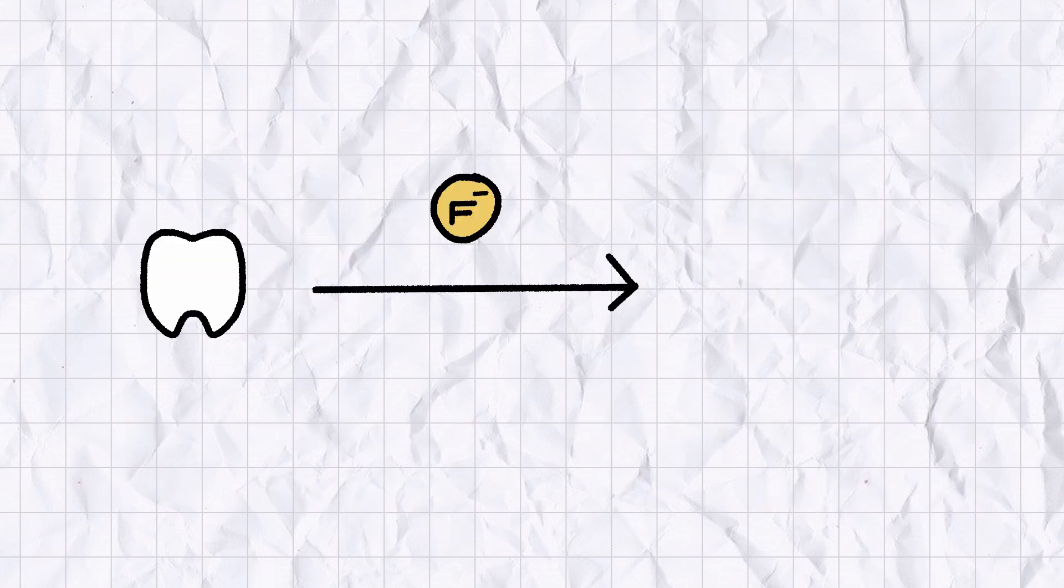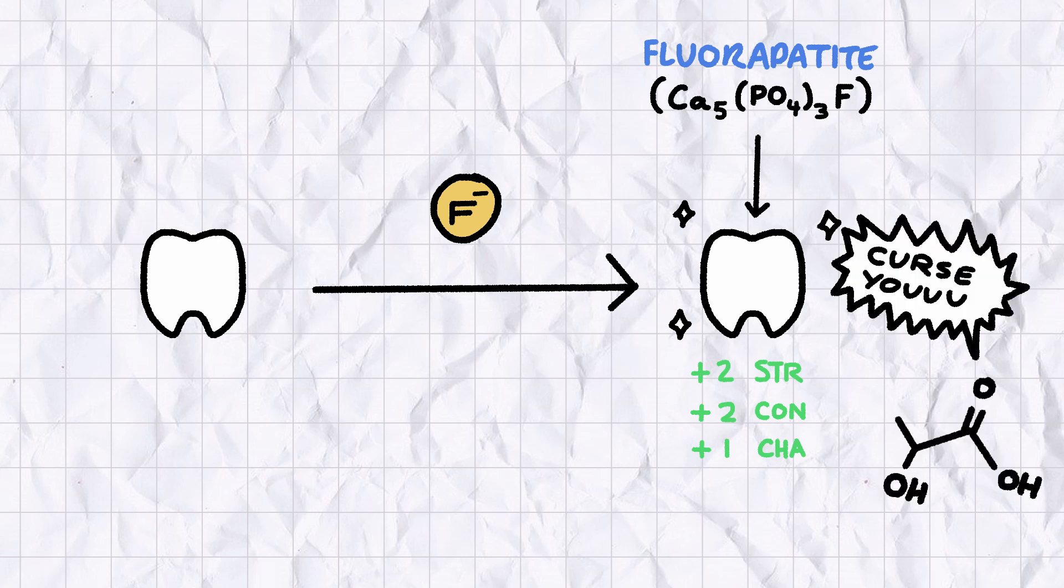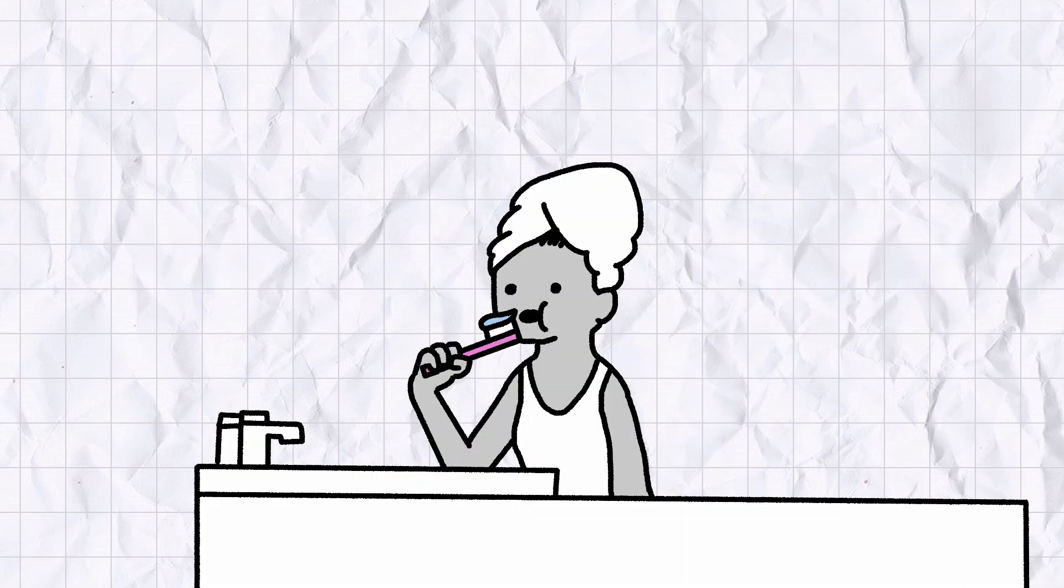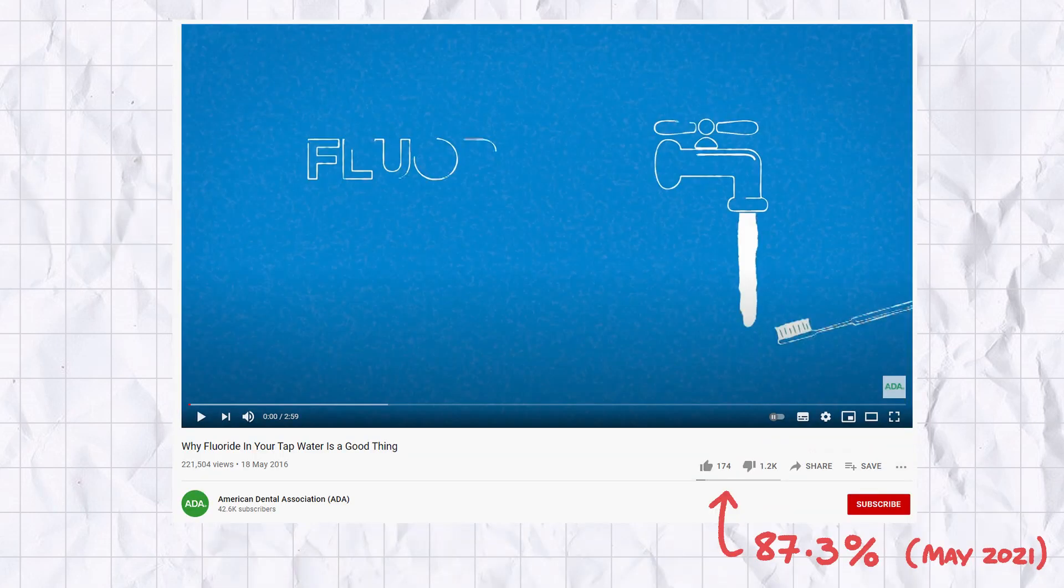But fluoride ions help protect your pearly whites by changing the chemical makeup of your enamel. Upon being exposed to fluoride ions, enamel will partially remineralise itself into fluorapatite, a mineral that is much more resistant to lactic acid than ordinary tooth tissue. Because of this, fluoride salts are often used in toothpaste to promote the growth of strong teeth, and many countries in the developed world add tiny amounts of fluoride to their drinking water, a practice that has come with its fair share of controversy, as shown by the like ratio on this video by the American Dental Association.